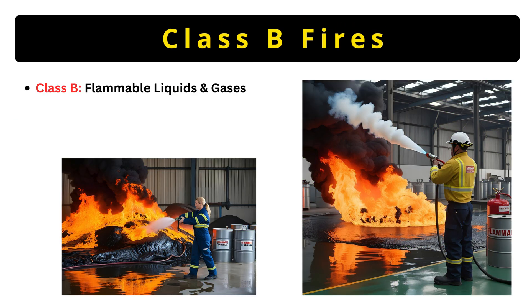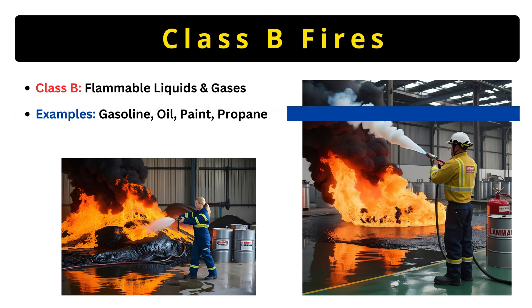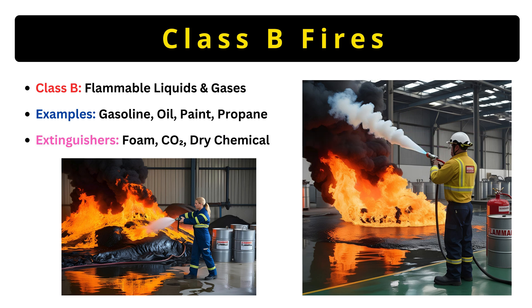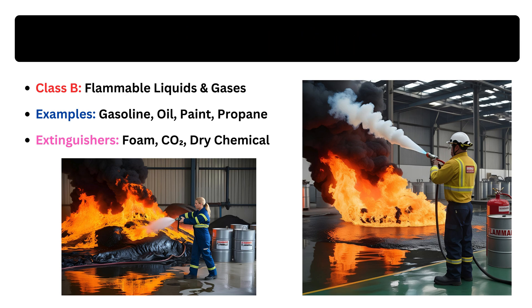Next up, Class B fires. These involve flammable liquids and gases — think gasoline, oil, paint, or propane. Water won't work here; in fact, it can spread the fire. Instead, you need foam, CO2, or dry chemical extinguishers, which smother the flames by cutting off oxygen. Remember, never use water on a grease fire in the kitchen — that's a Class B hazard.